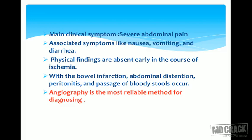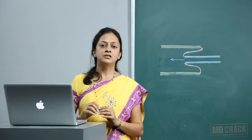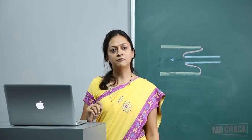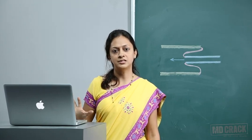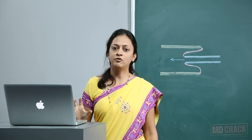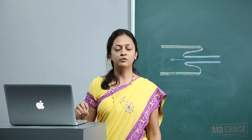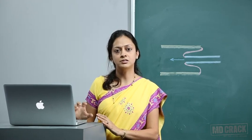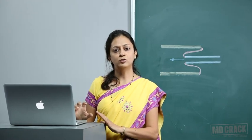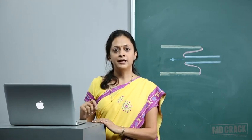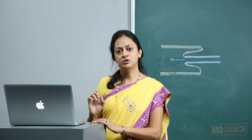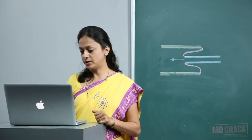With bowel infarction, there will suddenly be abdominal distension, peritonitis, and passage of bloody stool. Angiography is the most commonly reliable investigation in this case. Even CT scan of the abdomen might not give a perfect diagnosis in acute mesenteric ischemia — angiography is the right choice of investigation.